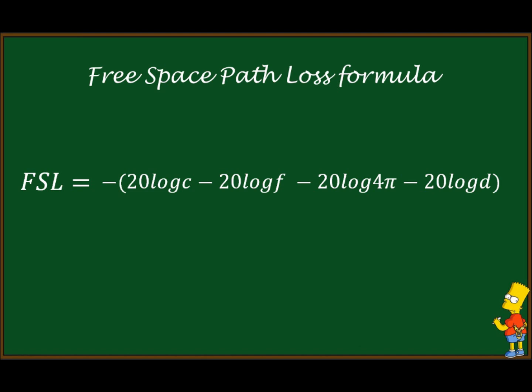When we express speed of light as a number in meters per second, we can calculate the logarithm of it and we get the well-known free space path loss formula.